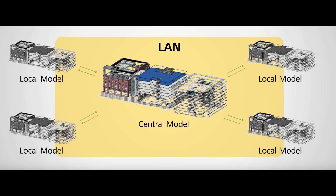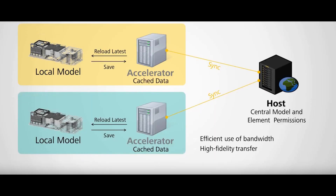If you've got multiple sites and fairly large models, bandwidth becomes an issue when updating a large model across the network. What Revit Server does is you still have a central model, but each site has an application called an accelerator. Each site — whether in the same country, a different country, or anywhere around the world — gets an accelerator that talks back to the central model, while each local user at each site talks to the accelerator.